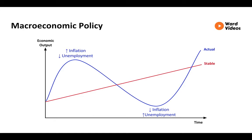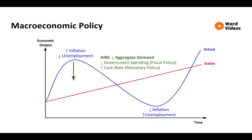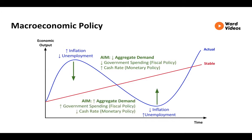The government intervenes by smoothing out these fluctuations. For example, during an upswing, the government wants to reduce aggregate demand, so they decrease government spending and the RBA will increase the cash rate, which will decrease disposable income. While, during the downswing, the government wants to increase aggregate demand — they increase government spending and decrease the cash rate to increase disposable income.